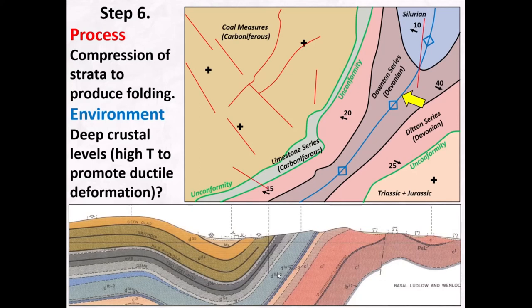By looking at the cross-section and map, we can see that all of these rocks have been folded. In some places the coal measures are still horizontally bedded, but close to the fold axis those beds have been folded and still have a tilt, while heading away from the fold axis they flatten out — we get curvature of the limb. In order to fold these rocks they must all have been compressed, and to get folds like this I'd assume the depth was fairly deep in the crust with high temperatures to promote ductile deformation. So after the coal measures were deposited, they must have been buried and then compressed laterally to give these folds.